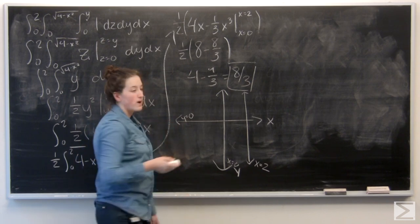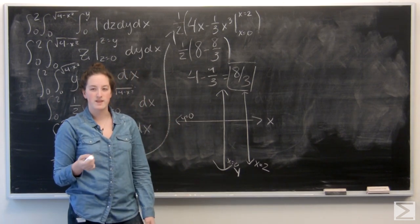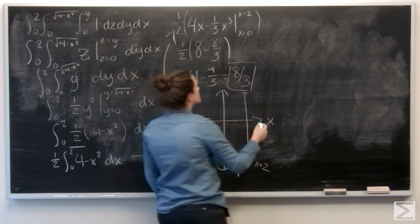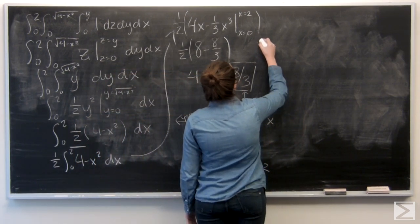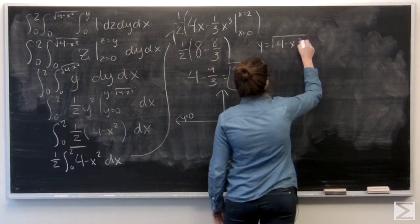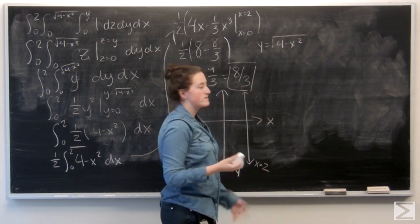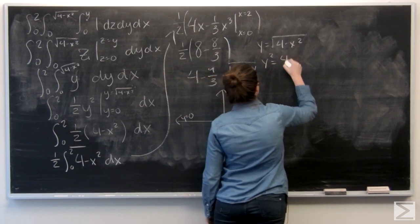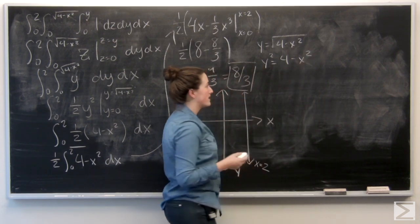And my upper bound for y is the square root of 4 minus x squared. So, if I thought about rewriting that, I would look at it this way. Square both sides, right? Because I don't really want to deal with that square root. y squared equals 4 minus x squared.